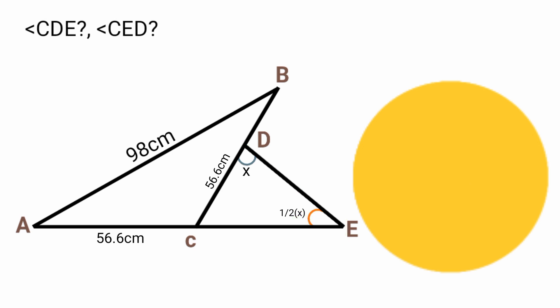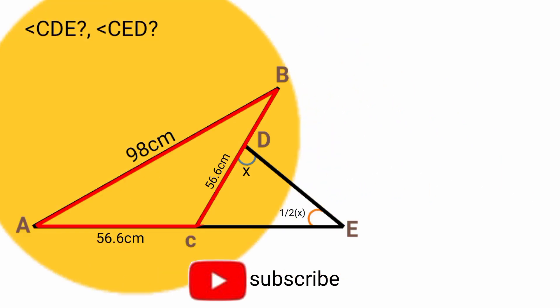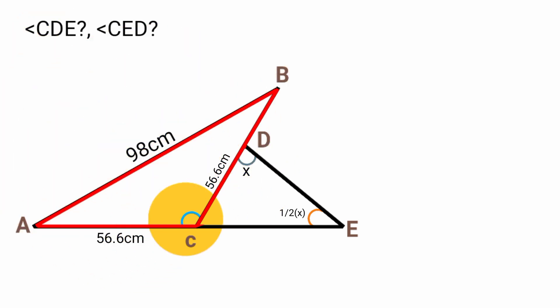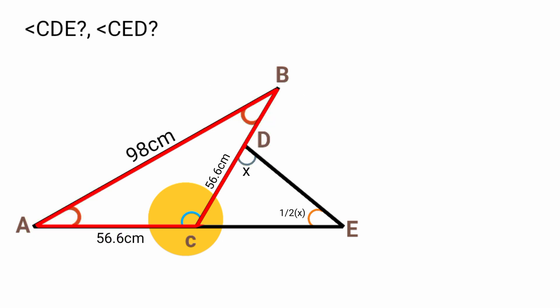To find the angles, we return to triangle ABC. Since line AC and line BC are equal, the triangle is an isosceles triangle with line AB as the base. The angle facing the base is the vertex angle, which is angle ACB, and the two base angles are equal — as the base angles of an isosceles triangle are always equal.